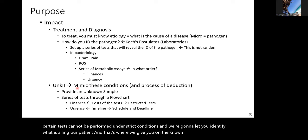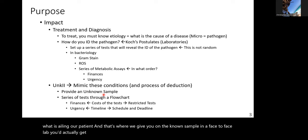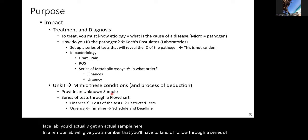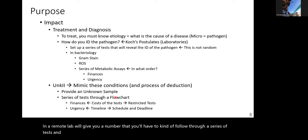We're going to mimic that condition in our second unknown by doing the same thing. We'll give you a time limit, a money limit, and acknowledge that certain tests cannot be performed under strict conditions. Your job is to identify what is ailing our patient, and that's where we give you an unknown sample. In a face-to-face lab you'd get an actual sample; in a remote lab we give you a number to follow through a series of tests using your flowchart.